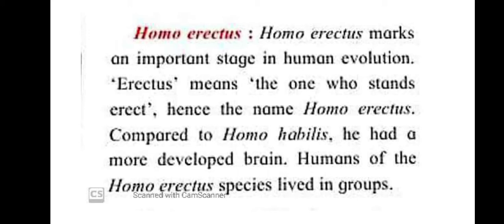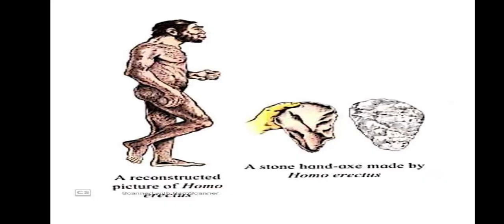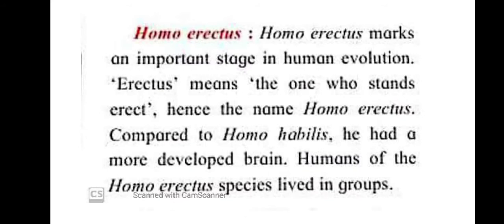Homo erectus had a more developed brain. If you compare Homo habilis and Homo erectus, the brain of Homo erectus was bigger and more developed. This was happening because the humans were using their brain more and more, and as the brain was being used more and more, it was developing — becoming bigger and bigger. Homo erectus lived in groups.